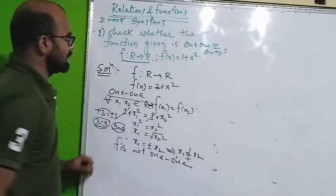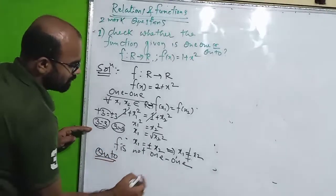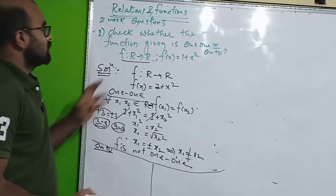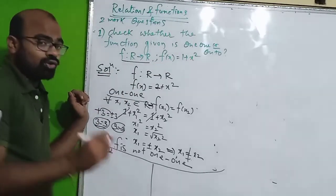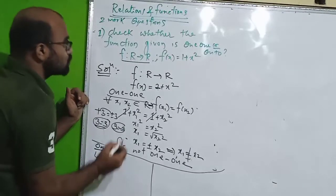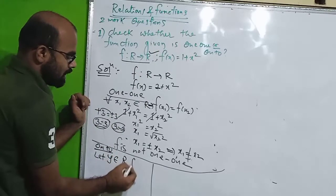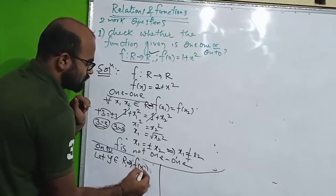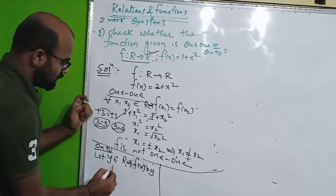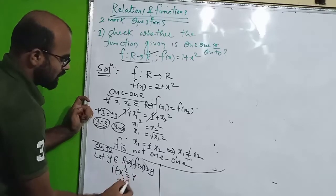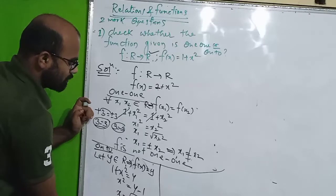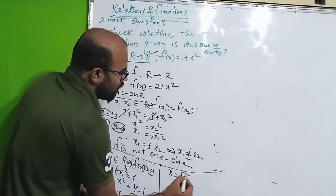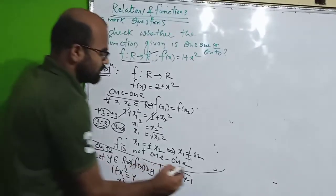So f is not one-one. Now for the onto check: f of x is equal to 1 plus x squared. Let y belong to the codomain, that is R, and set f of x equal to y. So 1 plus x squared equals y, which gives x squared equals y minus 1, and x equals root of y minus 1.